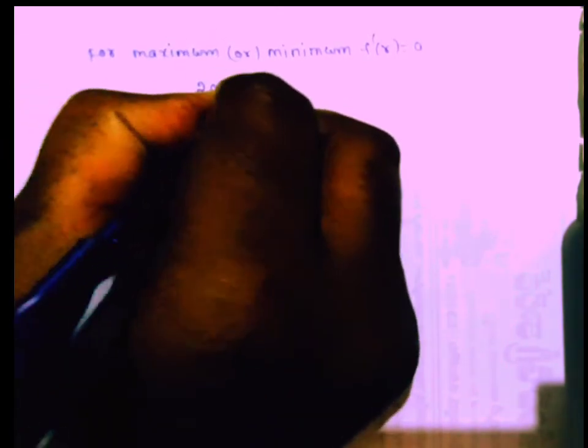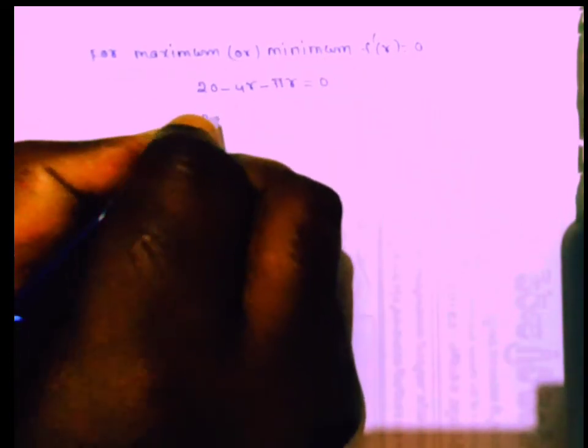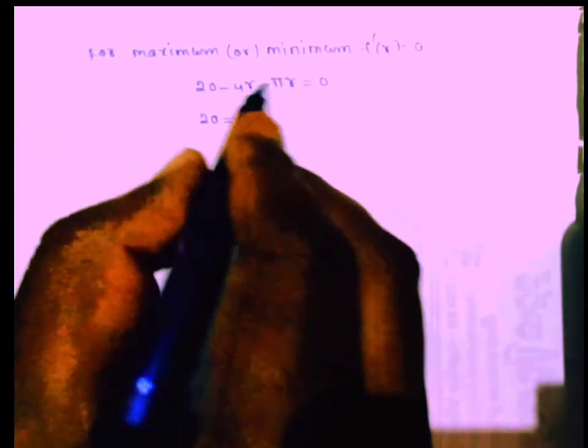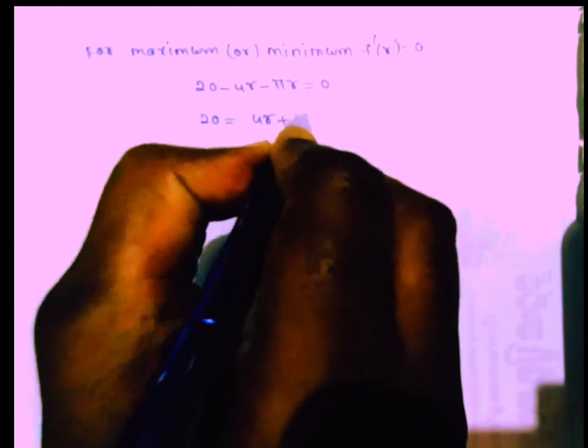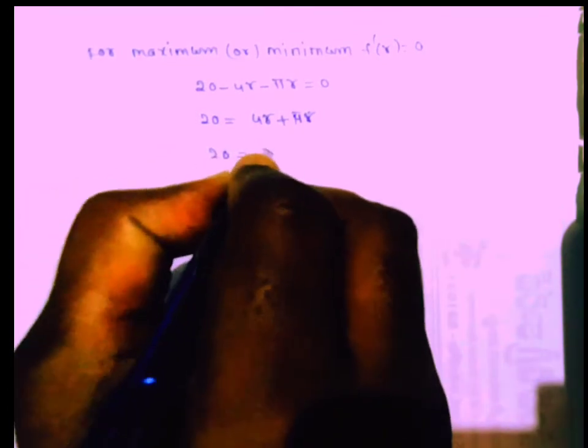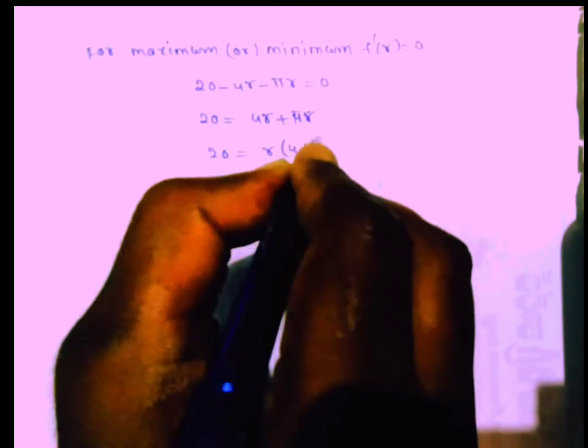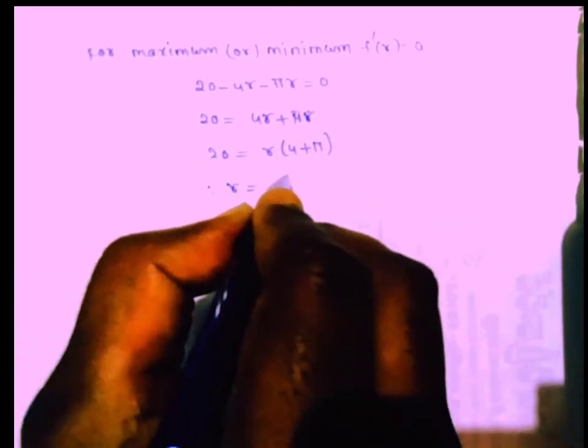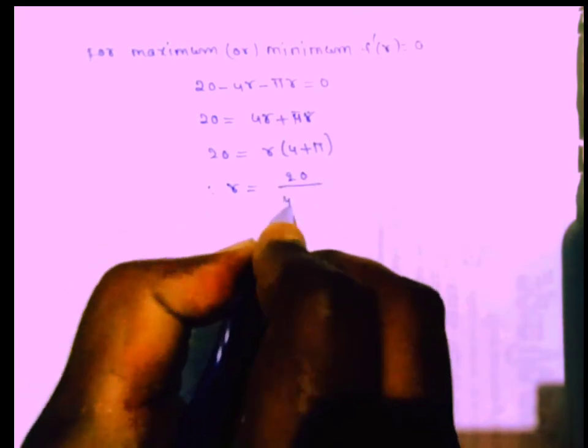To find the maximum, set F'(R) = 0. So 20 − 4R − πR = 0, which gives 20 = 4R + πR = R(4 + π). Therefore R = 20 / (4 + π).